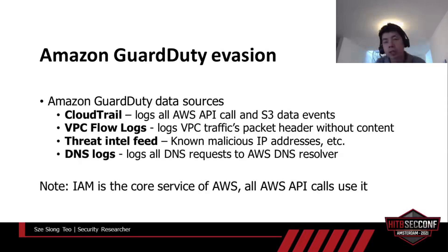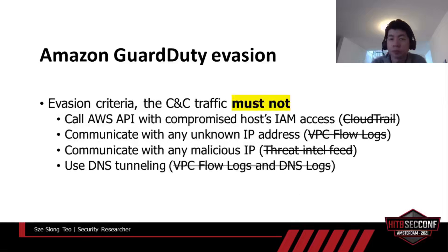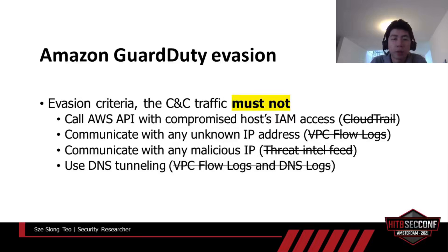Now I'll talk about the main topic of this presentation: GuardDuty evasion. Amazon GuardDuty is a managed threat detection service from AWS. According to the AWS website, GuardDuty works by analyzing data sources from CloudTrail, VPC flow logs, and DNS. It also uses threat intelligence feeds and machine learning to detect anomalies in the AWS account. One important thing to keep in mind is that IAM is used everywhere to call AWS APIs. To avoid GuardDuty detection, the malware must not call any API service using the compromised host's IAM credential, so we don't leave any trace in CloudTrail. And we don't want it to communicate with any IP address that is not trusted by AWS, and we can't use DNS for data exfiltration since GuardDuty can detect that.